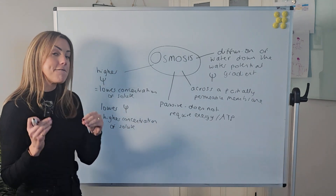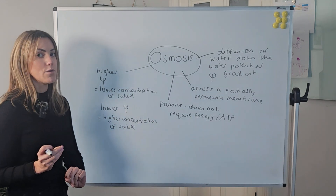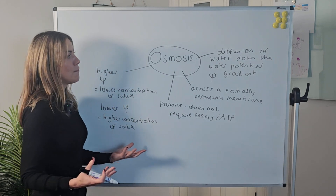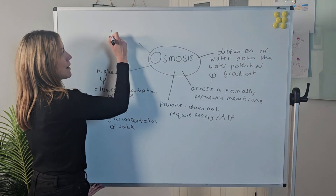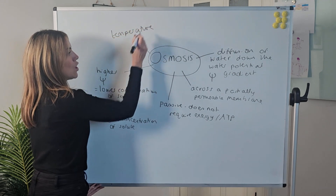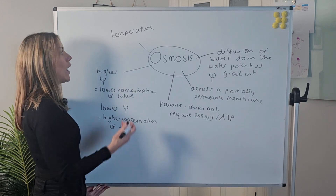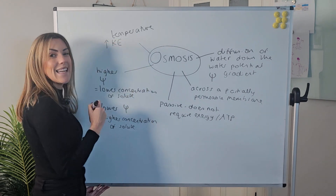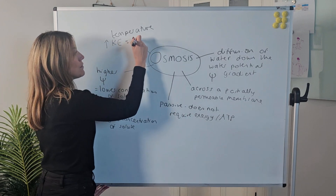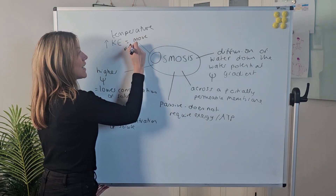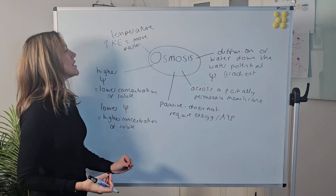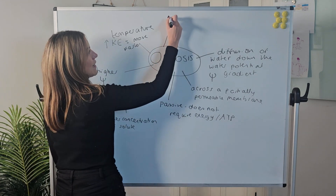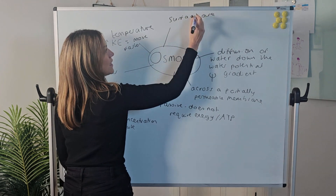Let's think about some factors that affect the rate of osmosis — you'll recognize these as factors that also affect the rate of diffusion. Temperature affects the rate of osmosis: increasing temperature increases the kinetic energy of the water molecules, which means they move faster, so increasing temperature increases the rate of osmosis.